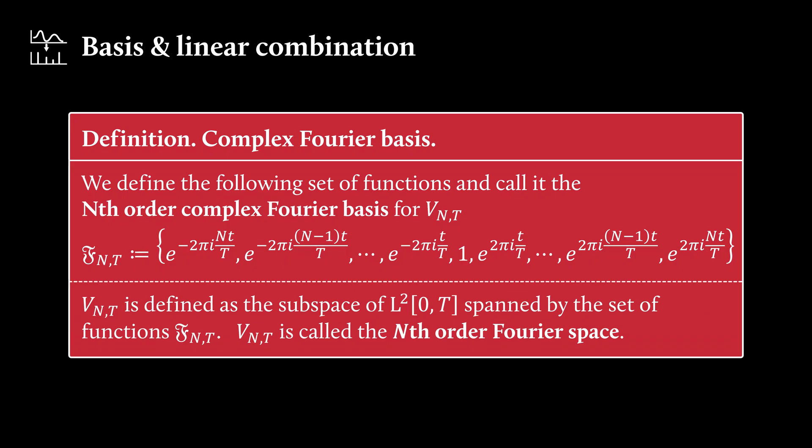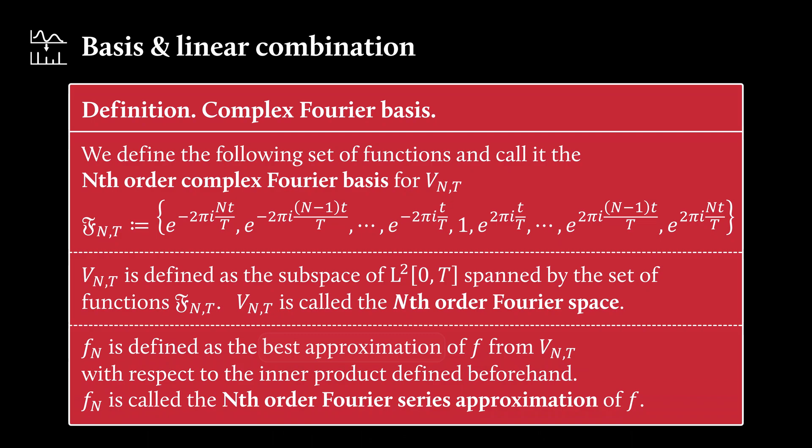Now we also define fₙ, which is going to be the best approximation of f from vₙₜ with respect to the inner product defined beforehand. And fₙ is then called the nth order Fourier series approximation of f. Now what's this best approximation all about?